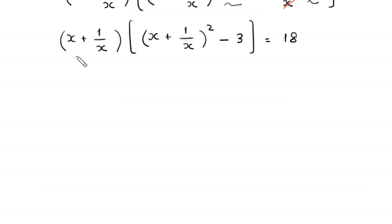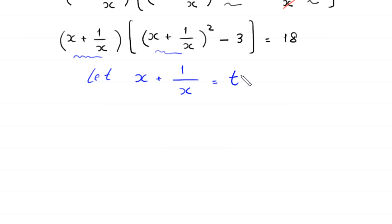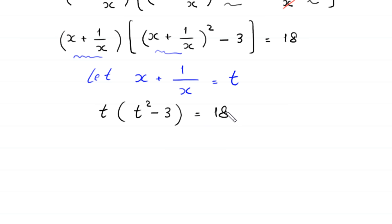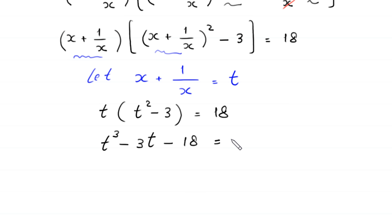Now, we suppose that x plus 1 over x is equal to t. So, this equation will become t times t squared minus 3 is equal to 18. We multiply this t by t squared, this will become t cubed, and t times negative 3 will become negative 3t. We move 18 to the left hand side, this will become t cubed minus 3t minus 18 is equal to 0.